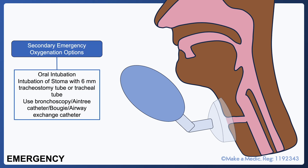Secondary emergency options that should be considered if you continue to struggle to ventilate the patient include oral intubation or intubation of the stoma with a 6 mm tracheostomy tube or tracheal tube. Instruments like a bronchoscope or a bougie may be helpful. Any attempts at intubation should only be performed by a suitably airway-trained individual, as it does run the risk of causing significant bleeding and forming a false passage.